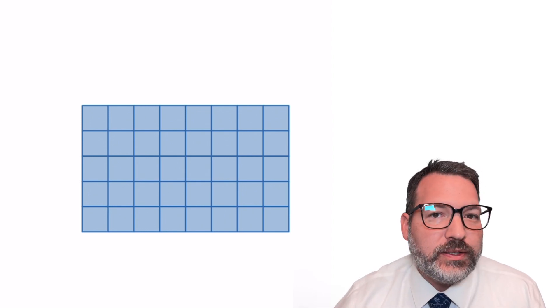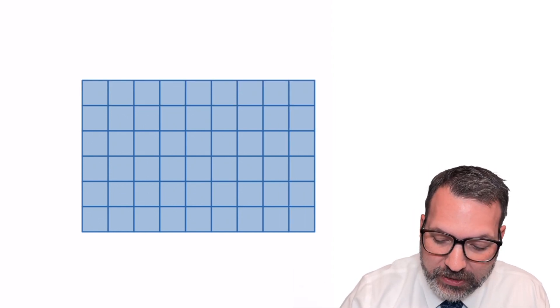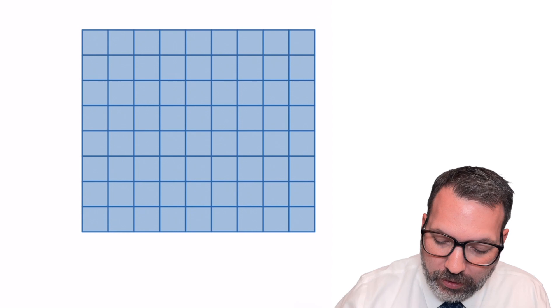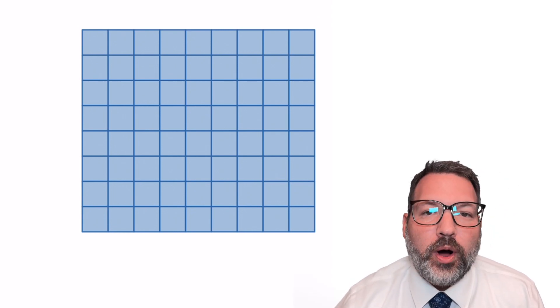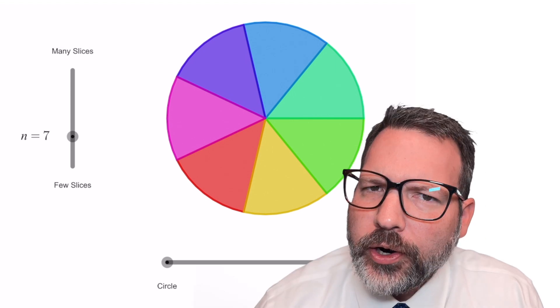Obviously, one thing we can't do is what we do with rectangles, where we just take a ruler and measure out the base of the rectangle, the height of the rectangle, and then multiply those two quantities together. Because as you look at a circle, of course, there are no polygons, or are there?